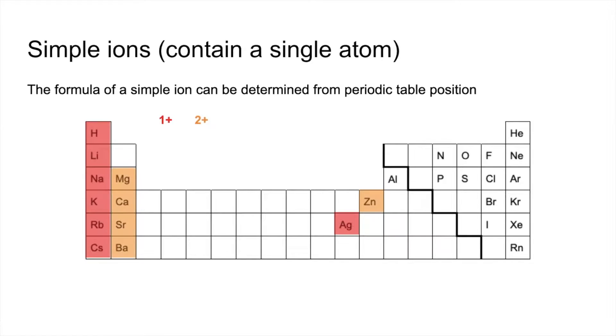These substances here form a 2 plus ion. Very easy to explain these. Group two, two electrons in the outer shell. So they will lose those to get a full outer shell underneath. So they get a 2 plus charge. And here's the odd one out, if you like. Zinc forms a 2 plus ion.